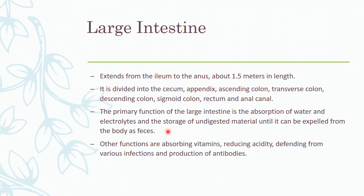The large intestine extends from the ileum to the anus. It is around 1.5 meters in length. It is divided into different parts: the cecum, from which we have a diverticulum known as the appendix, then the ascending colon, the transverse colon, the descending colon, the sigmoid colon, the rectum, and finally the anal canal.